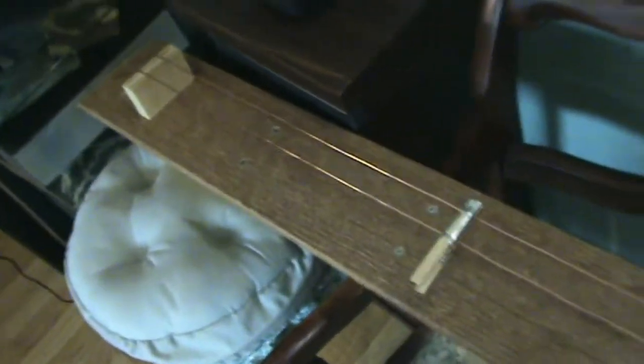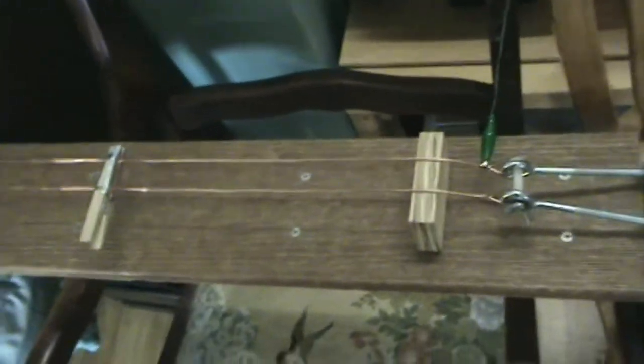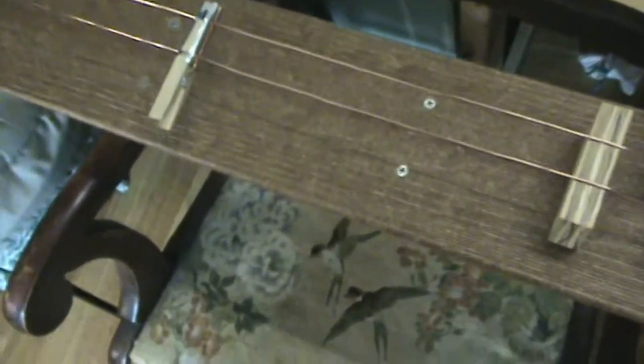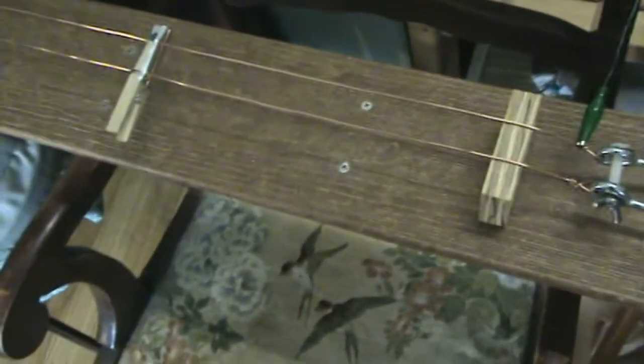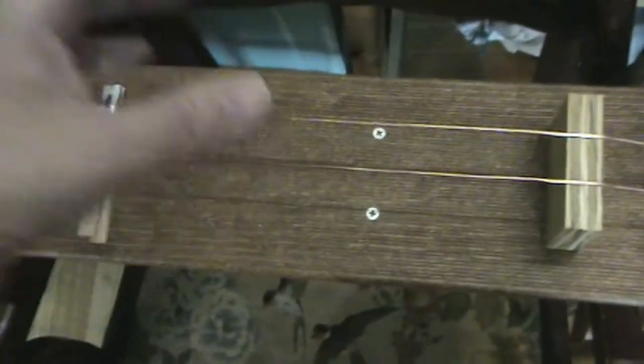So this will do 2 meter band. It will probably do 70 centimeter band pretty well. They're close enough together yet that it shouldn't radiate that much. But as you go higher in frequency, of course, there's always a chance the wires might radiate.